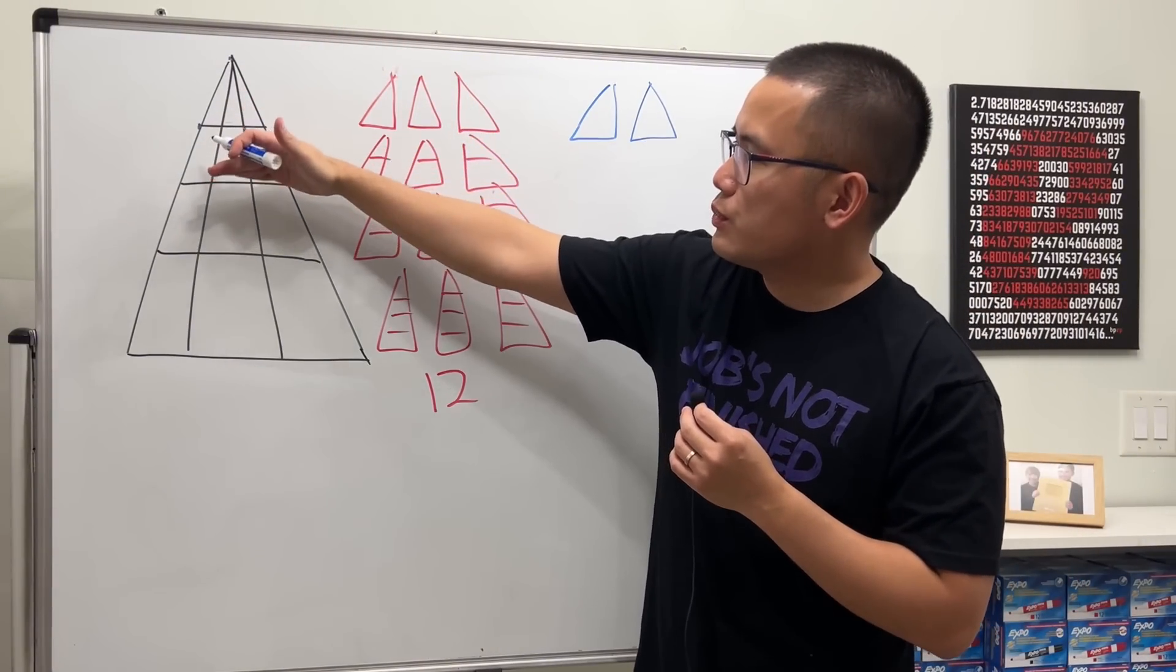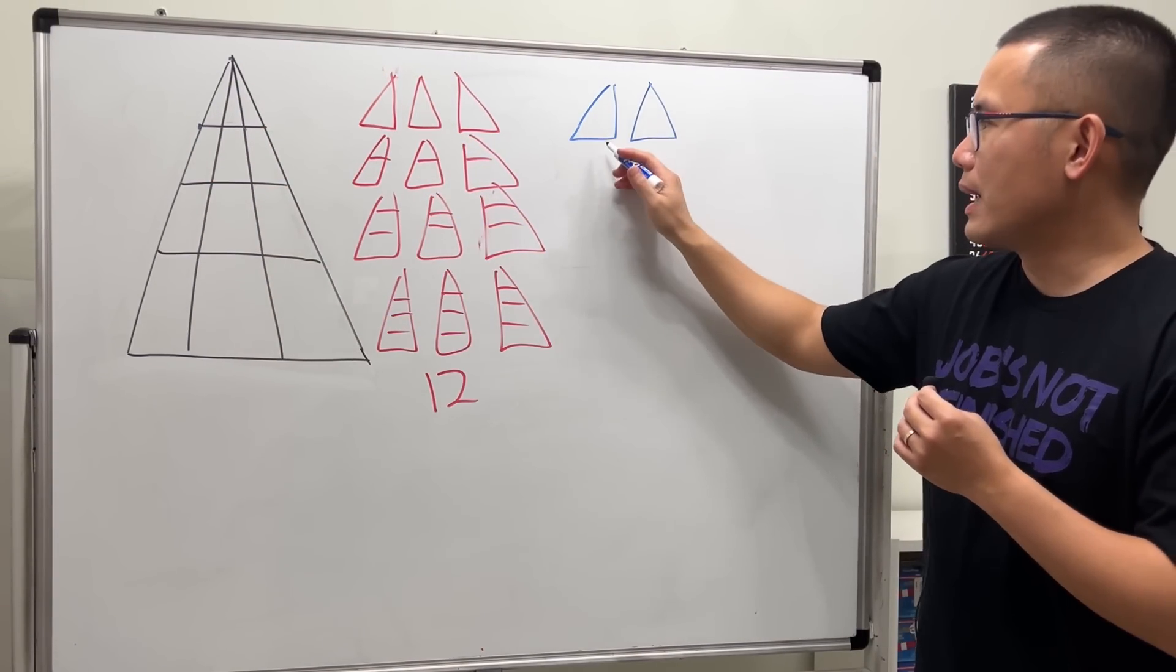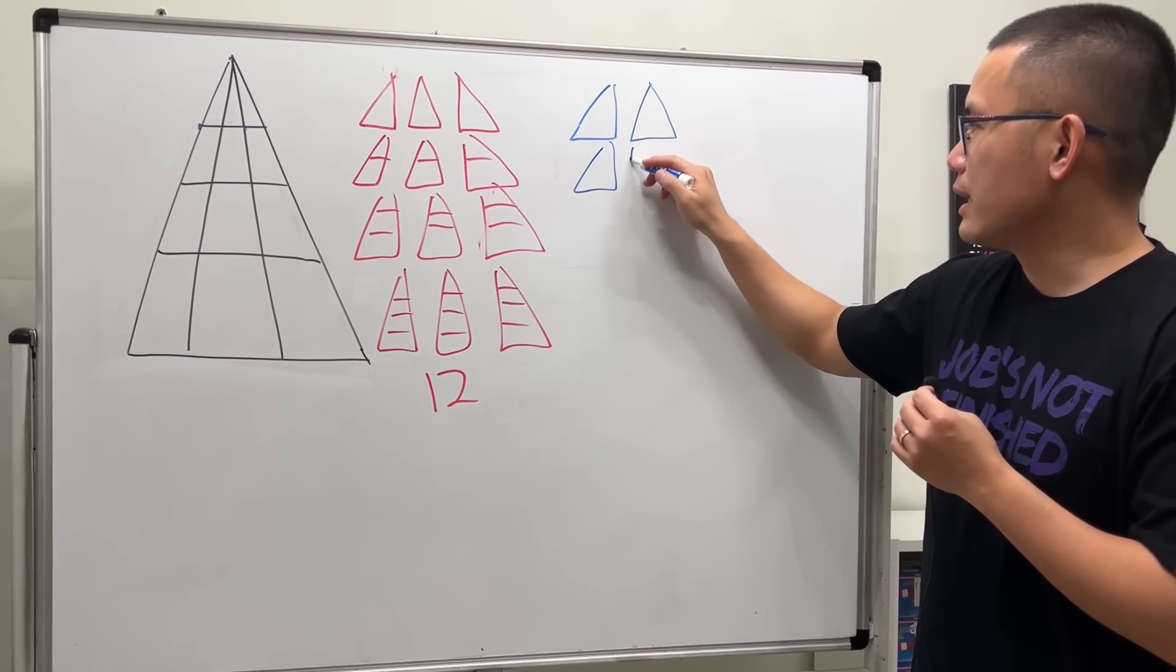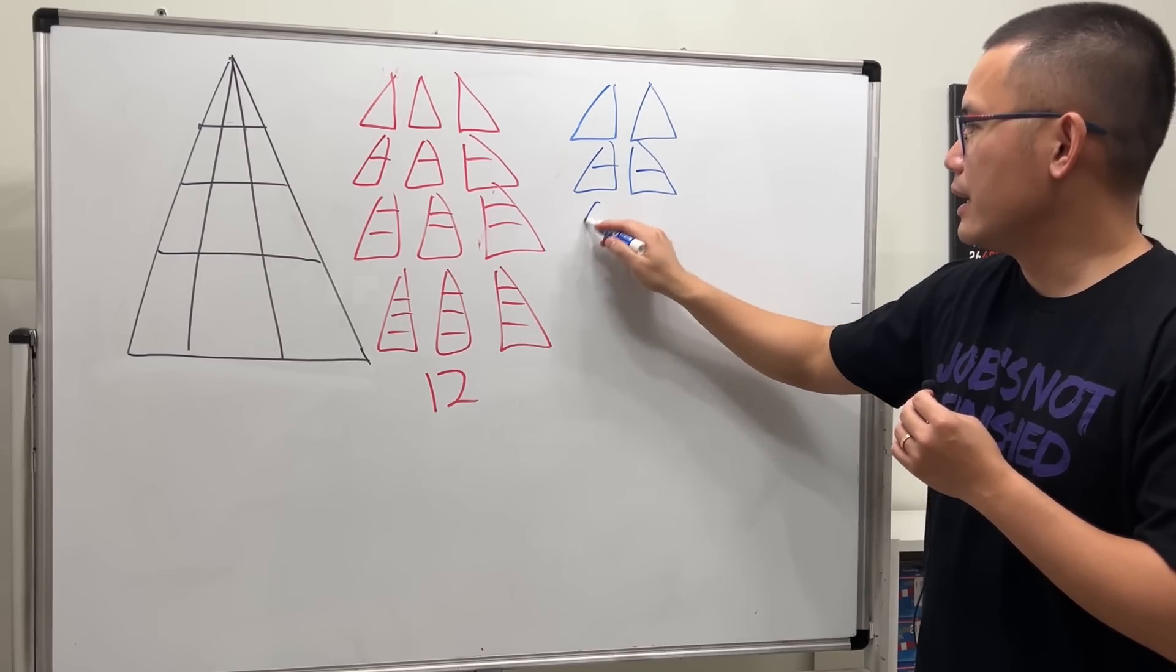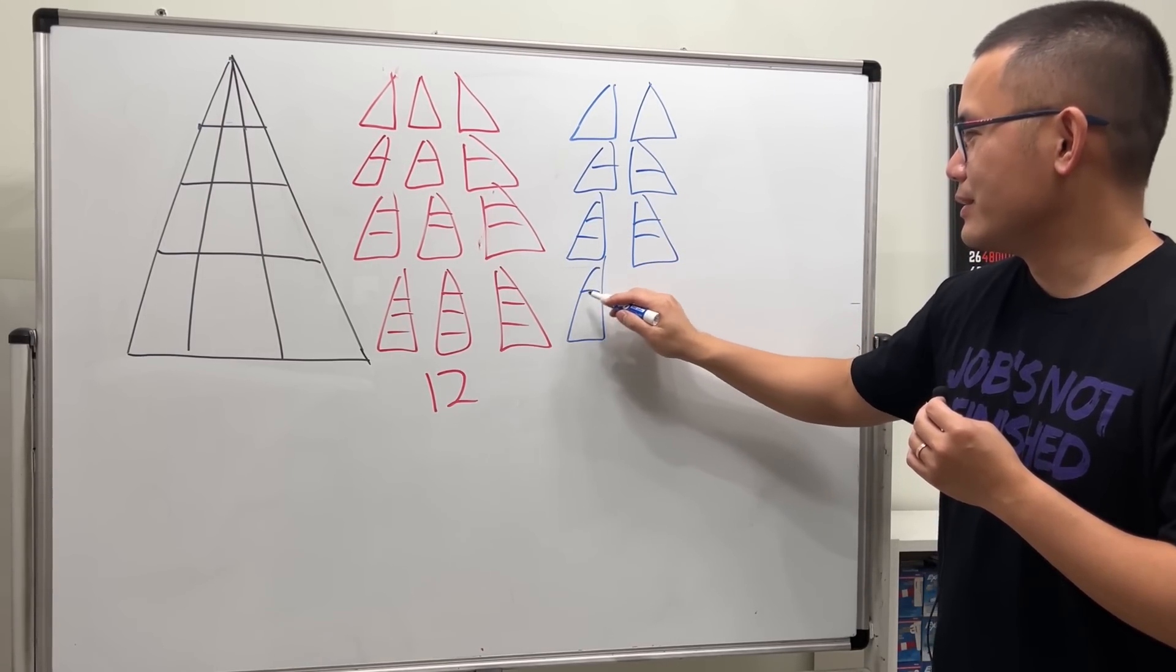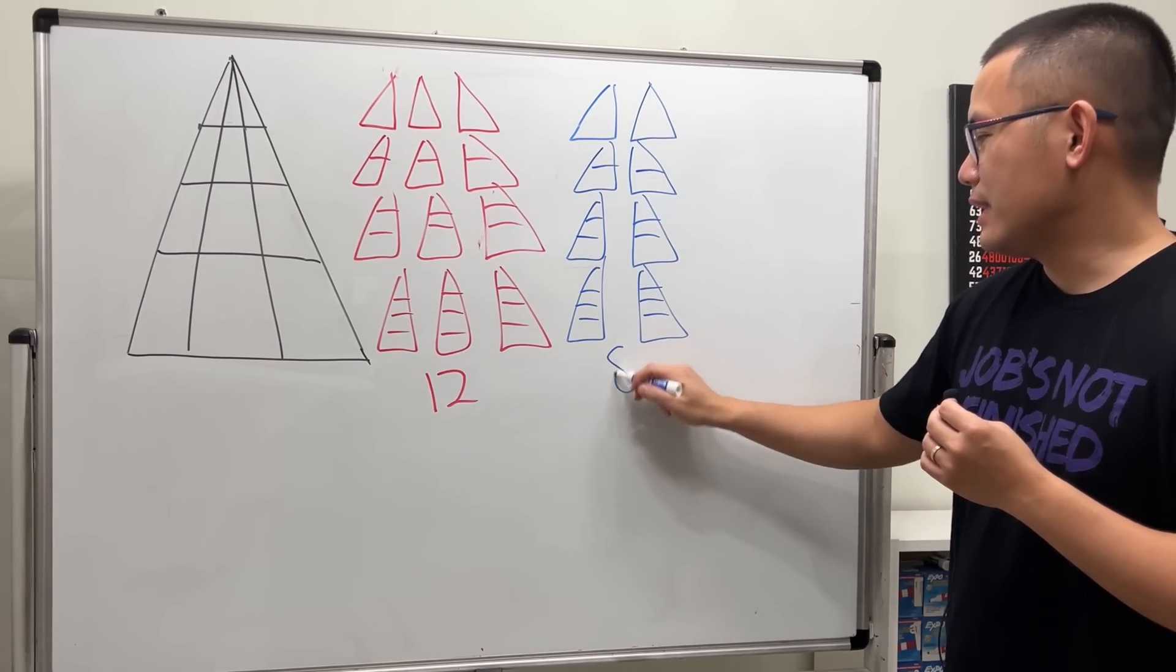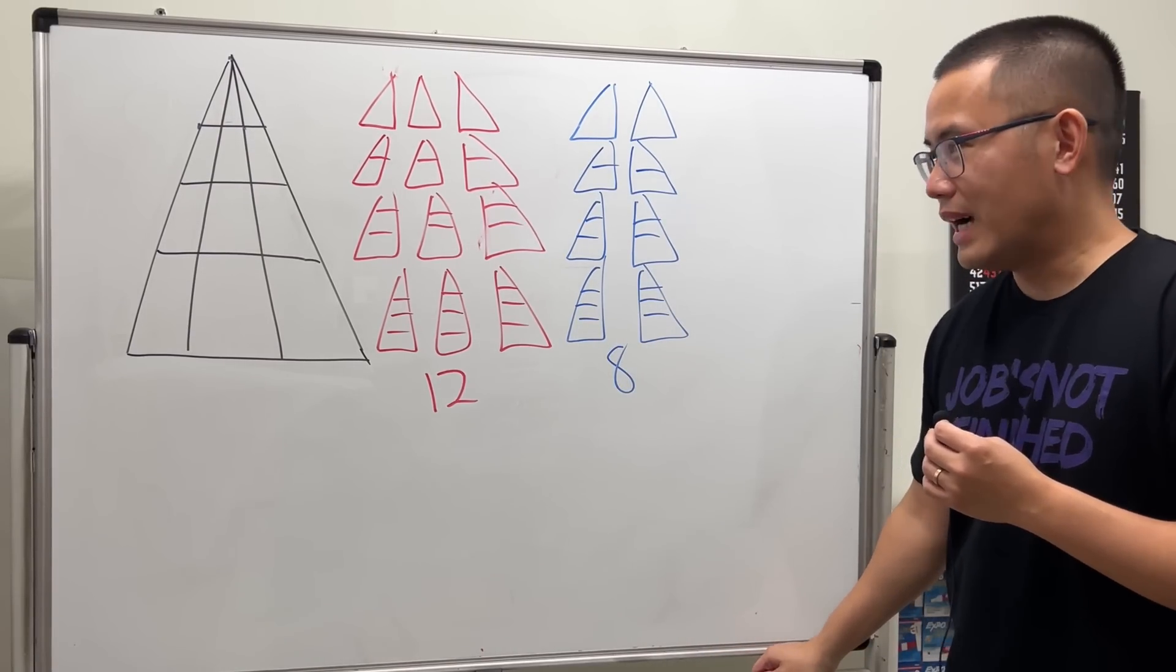And then we can do the same thing - we can just go to the next one, next one, next one. So we can have two times four, but I will still draw the picture for you guys, so it's like this, and then like this, and then like this. One, two, three, and then one, two, three. It's eight.